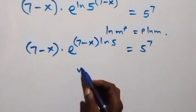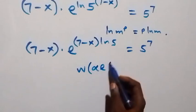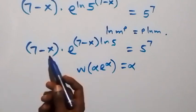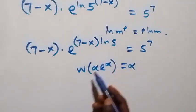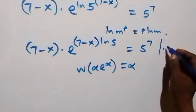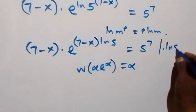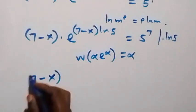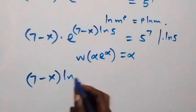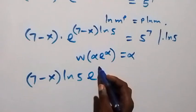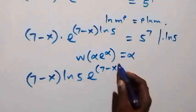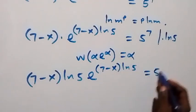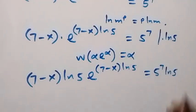From the Lambert W function, W(alpha × e^alpha) equals alpha. To make the power and the coefficient equal, we need to multiply through by ln 5. Multiplying this equation through by ln 5, this equation becomes (7 minus X) multiplied by ln 5, then e^((7 minus X) ln 5), equals 5 raised to power 7 times ln 5.